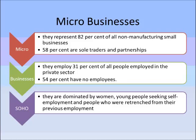Micro businesses employ up to 31% of all people employed in the private sector, making them a huge employer across Australia. However, 54% of them — so over half — have no employees whatsoever. There are thousands and thousands of micro businesses throughout Australia. They also tend to be dominated by women, young people seeking self-employment, or people who are retrenched from their previous employment. It's very common for people who've taken a retrenchment package to set up their own small company, often dealing with the clients they used to deal with when they worked for a large company.